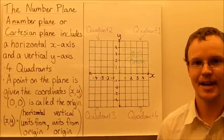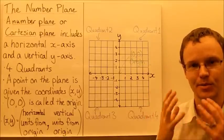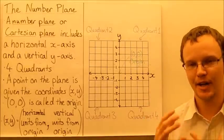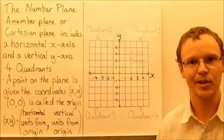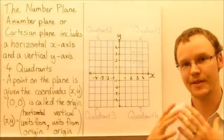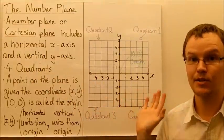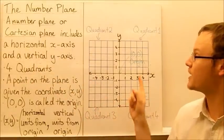The Cartesian plane is named after Rene Descartes, who discovered it or invented it as a method of communicating mathematical ideas and communicating maths in a way that could be shown in a graphical way, in a visual way. So there are four quadrants to the number plane, or the Cartesian plane.